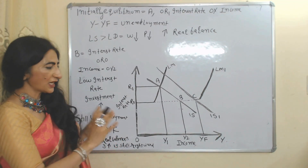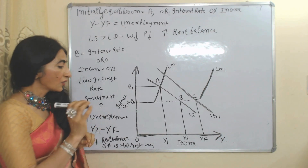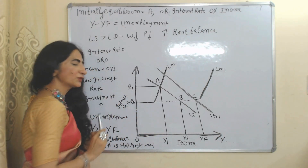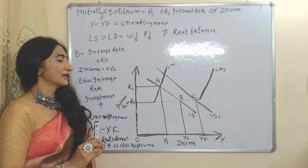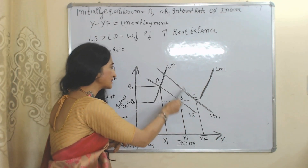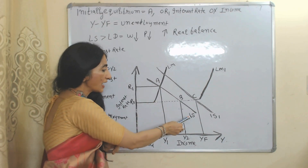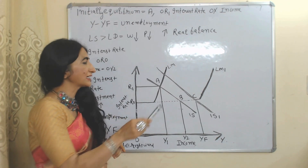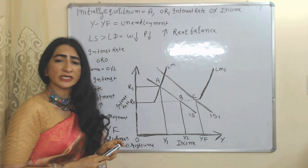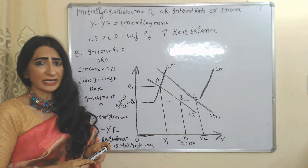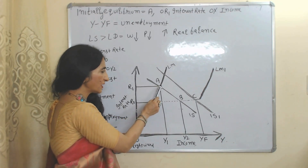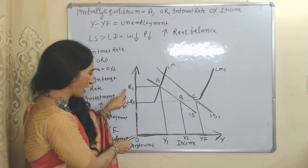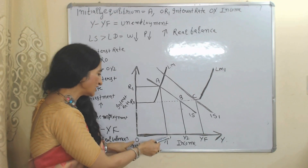Now we will see the real balance effect with the help of this diagram. On the x-axis we have income, on the y-axis we have interest rate. Here we have IS and LM curves. The IS curve shows equilibrium in the goods market; the LM curve shows equilibrium in the money market.